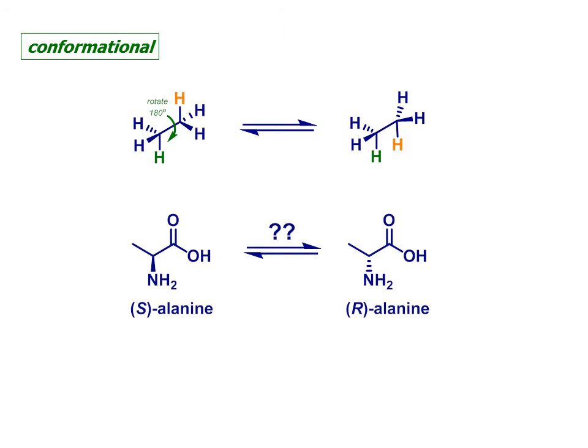Contrast this to configurational isomers. To convert R alanine into S, we would have to break one or more bonds, a much higher energy process. Rotating around a single bond is usually very easy, a low energy process, and therefore happens quickly and often at room temperature.